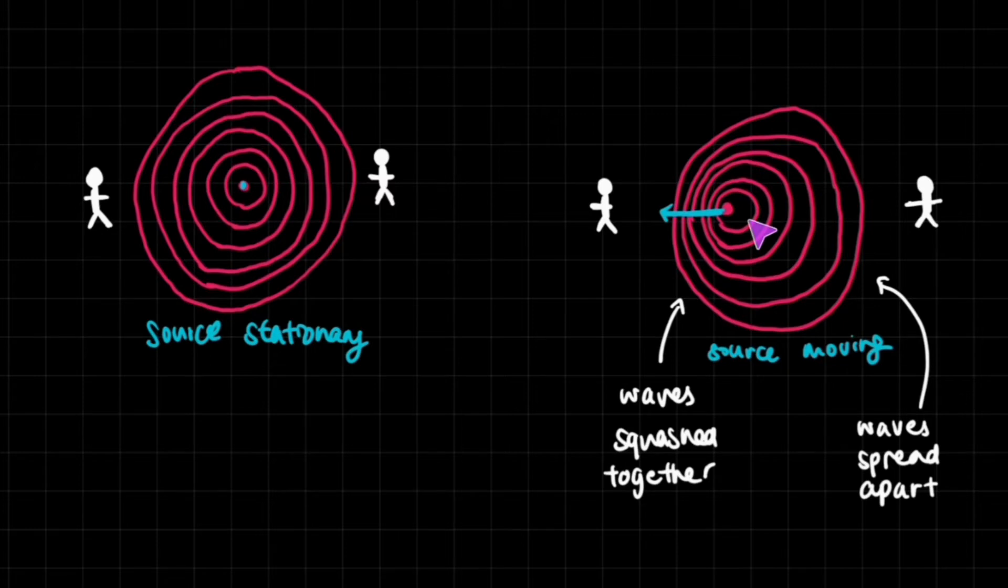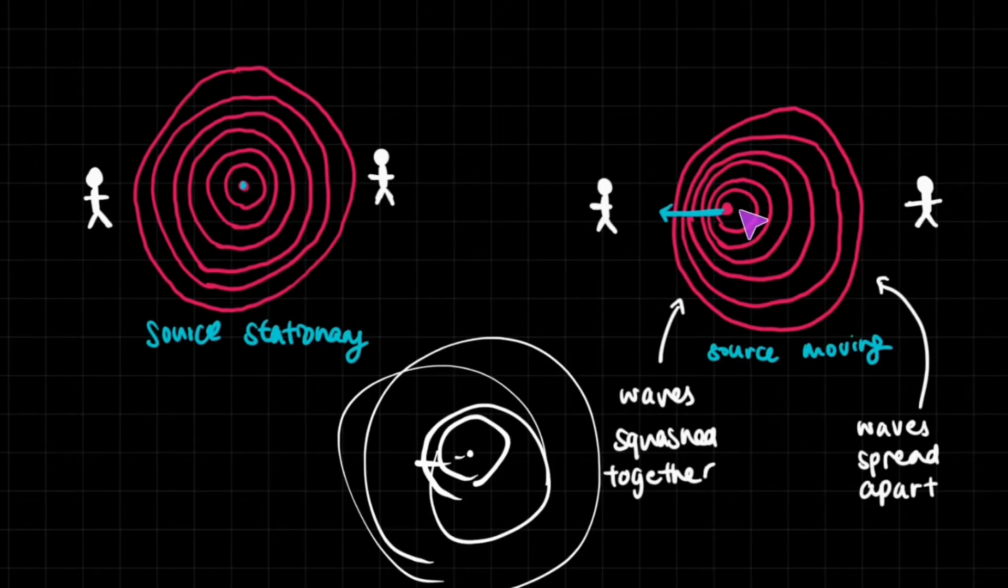The biggest wave on the outermost part is the first wave that was emitted. It was emitted when the source was in the middle of that circle. It spread out to be that big and was emitted again and again. Each time, the center of this wave got to the side more and more.